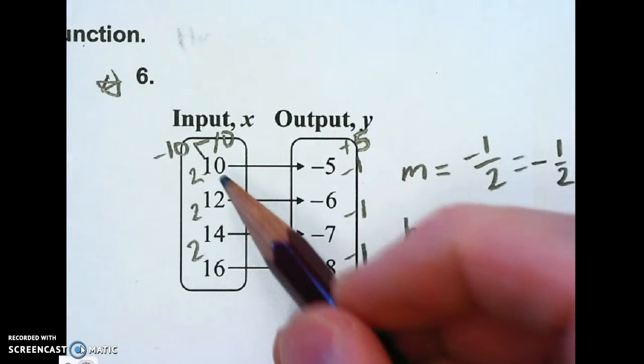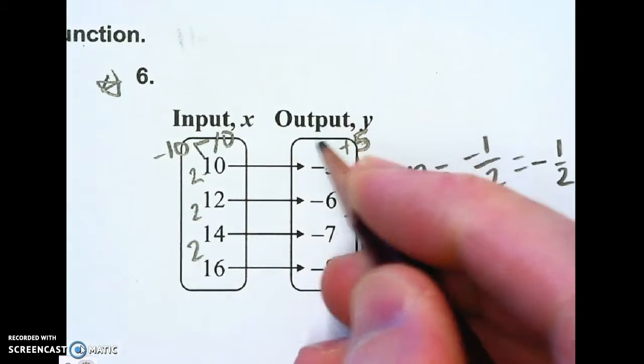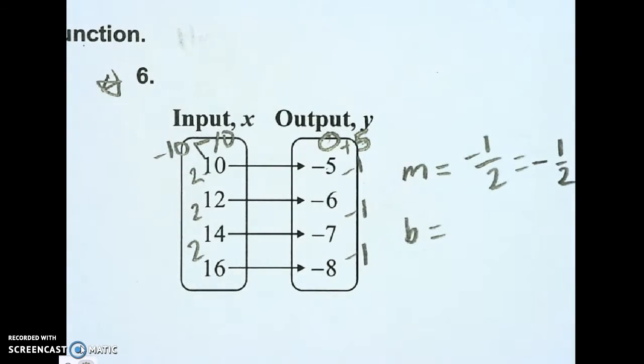Well, 5 plus negative 5 is 0. So my y-intercept is going to be 0.